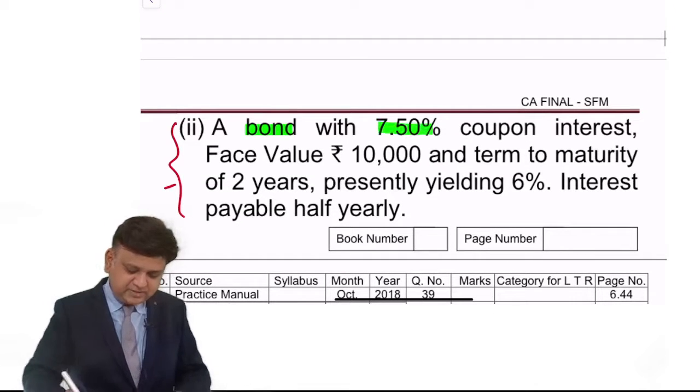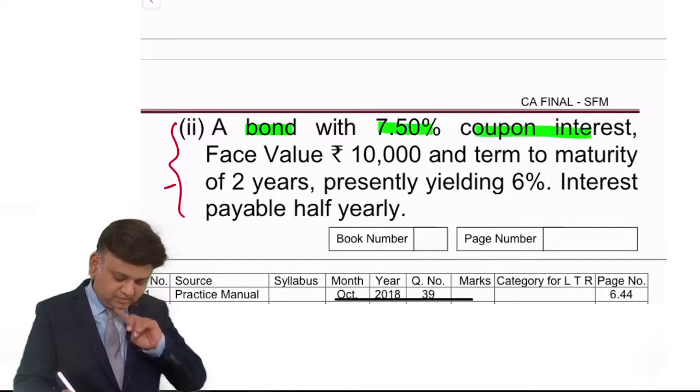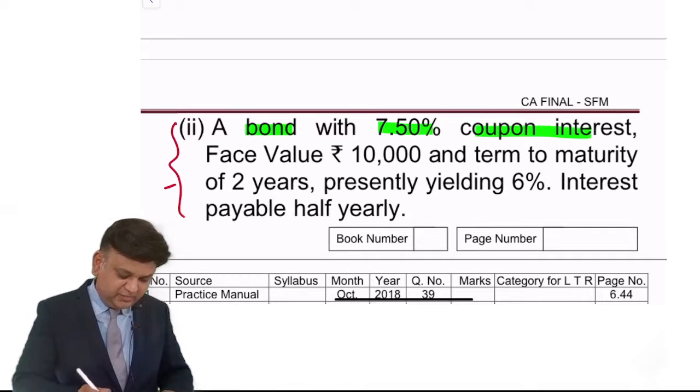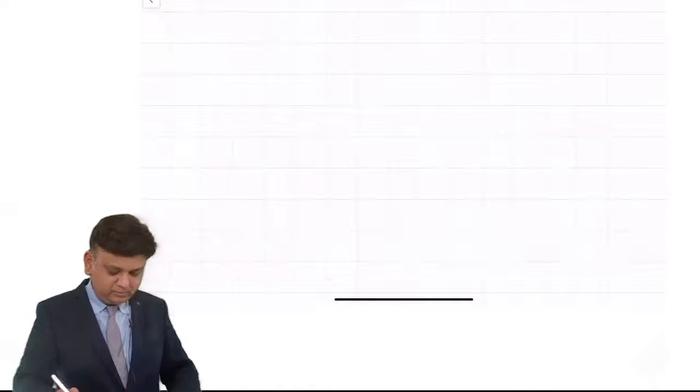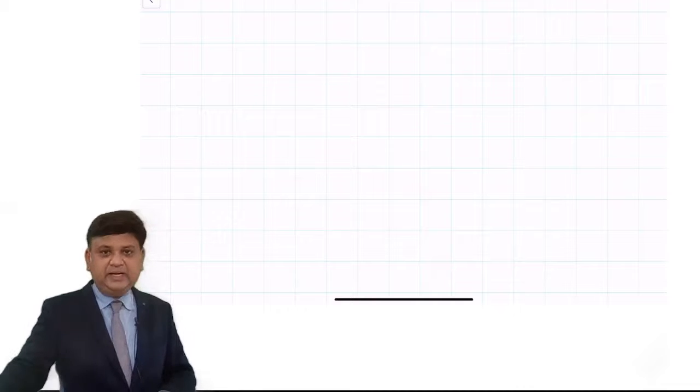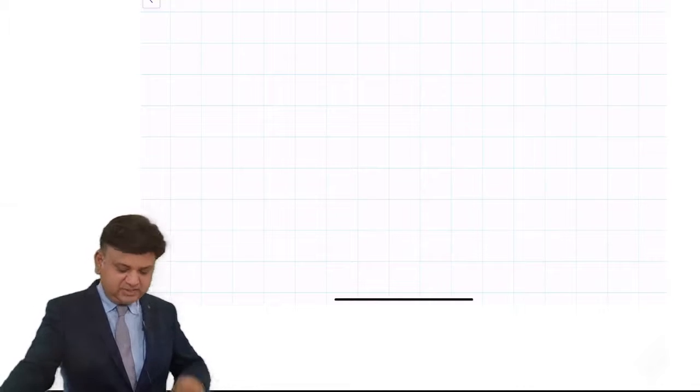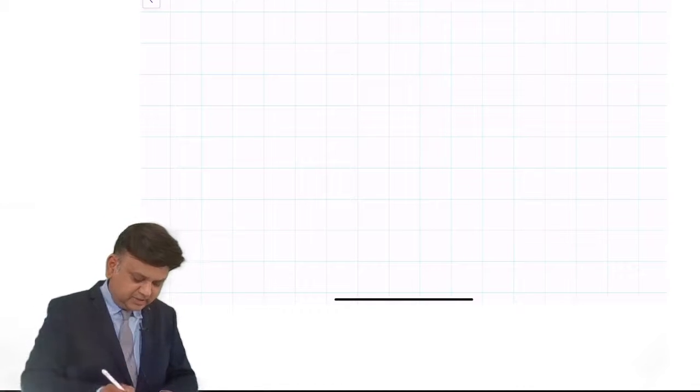With 7.5% coupon rate of interest, having face value of rupees 10,000, and term to maturity is 2 years, presently yielding 6%, interest is payable half-yearly. So we are required to make the calculation of the price of the security. I request you to write down the answer along with me.